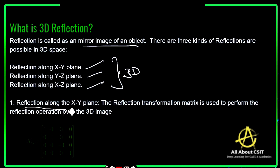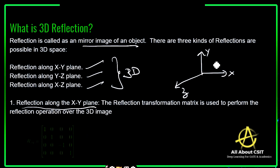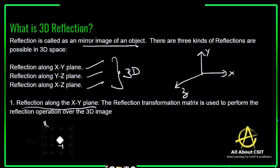When we talk about reflection along the XY plane — with X-axis, Y-axis, and Z-axis — the reflection transformation matrix used to perform this operation is: [1, 0, 0, 0, 1, 0, 0, 0, -1, 0]. So here the reflection of the image is on the Z-axis. If it is an XY plane, XY will remain the same and the Z coordinate becomes negative. That is why X is 1, Y is 1, and Z is minus 1.